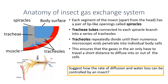Looking at the format of the tracheal system, we start with what's called a spiracle on the outside — the actual opening through which gas can move. We then have the tracheal tubes, which get smaller and smaller into what we call tracheole tubes. Eventually they reach the body cells, and gas can move freely through these tubes from the outside environment all the way down to the cells of the insect.